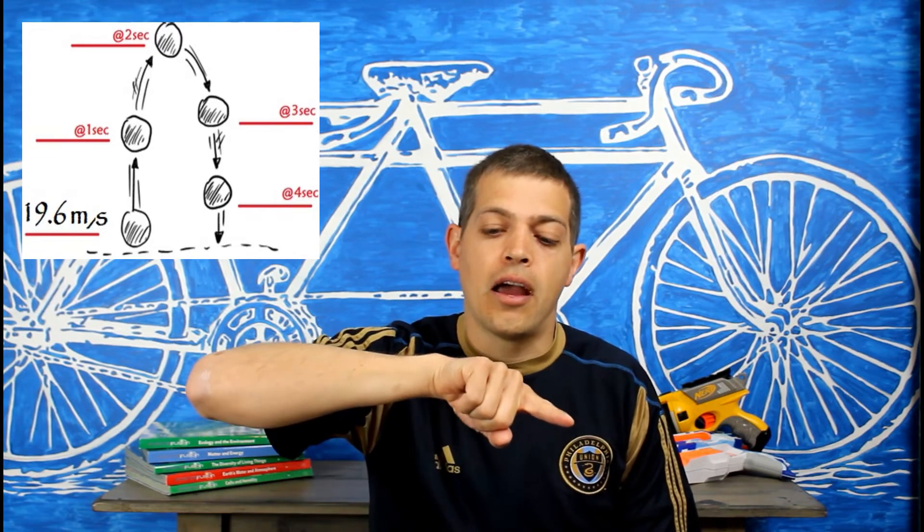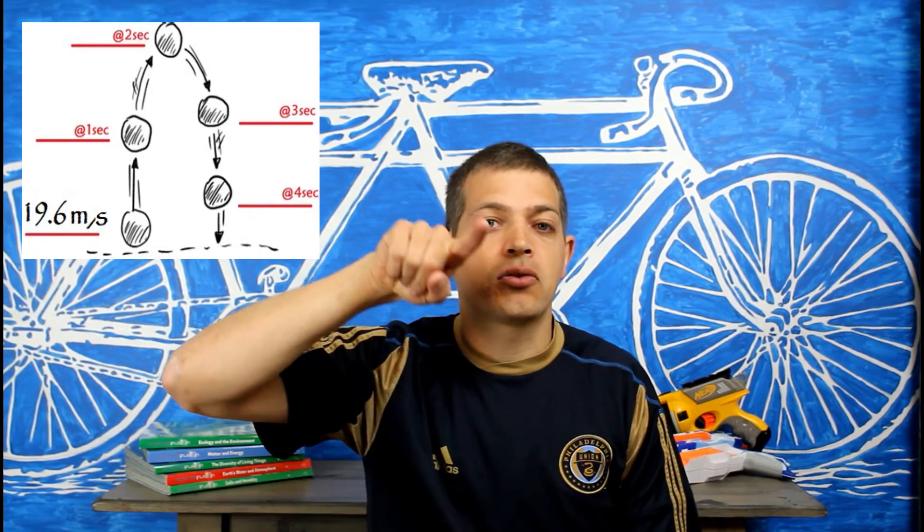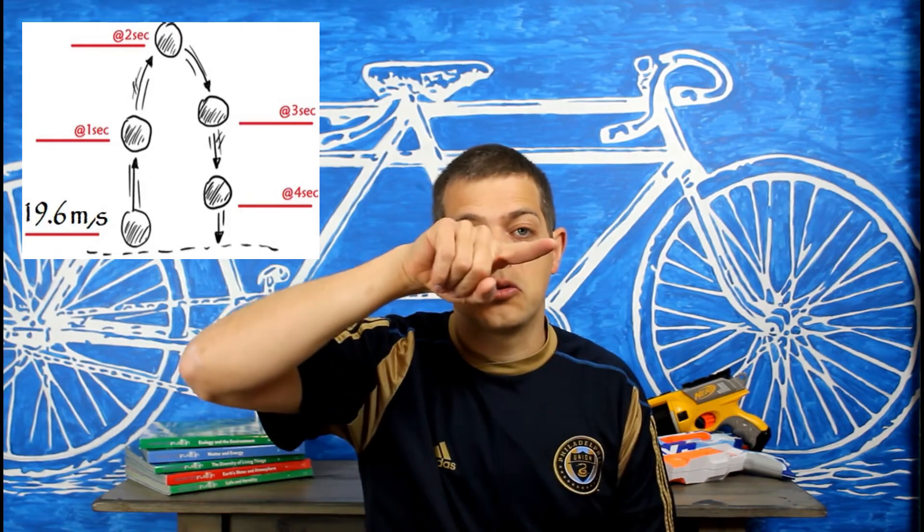Let's go to another problem. Say we're going to toss a ball straight up — maybe a pop-up fly in baseball or softball practice. What is happening to the ball's velocity? At zero seconds, the velocity is 19.6 meters per second. Gravity is going to be a negative number as it's going up, so at one second it's going to be going 9.8 meters per second — it keeps slowing down.